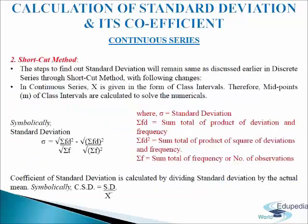Next we come to calculation of standard deviation and its coefficient in continuous series using shortcut method. We follow the same steps as we followed in case of discrete series. The only thing to remember is that instead of x we use m midpoints, because x is in the form of class intervals. The formula used is: SD equals to the square root of sigma fd squared divided by sigma f minus (sigma fd divided by sigma f) squared, where sigma fd equals to sum total of the product of deviations and frequency, sigma fd squared equals to sum total of the product of squared deviation and frequency, and sigma f equals to sum total of frequency or number of observations. Coefficient of standard deviation equals to standard deviation divided by mean.